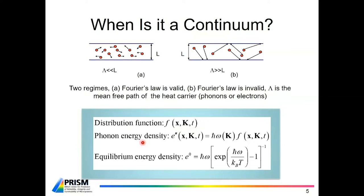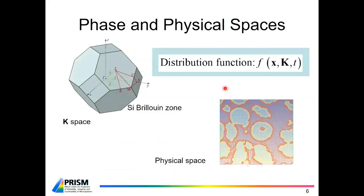Corresponding to that is a phonon energy density, which is the number distribution function multiplied by h-bar omega, giving you energy. In equilibrium, this phonon energy density satisfies the Bose-Einstein distribution, and the equilibrium energy density is described by a particular expression. When heat transfer is happening, we are disturbed from equilibrium and so we do not have the equilibrium E-naught. The distribution function is really a function of time for unsteady problems, but at steady state it's a function of physical space x and wave vector space k.